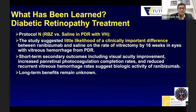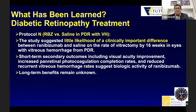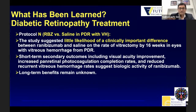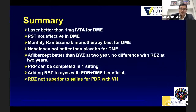Protocol N looked at ranibizumab versus saline in PDR with vitreous hemorrhage. The study found little likelihood of a clinically important difference between ranibizumab and saline on the rate of vitrectomy by 16 weeks. Short-term secondary outcomes including visual acuity improvement, increased PRP completion rates, and reduced recurrent vitreous hemorrhage suggest biological activity of ranibizumab. However, injecting ranibizumab for somebody with a fresh vitreous hemorrhage is probably not the best approach — it's not likely to quickly clear the hemorrhage. Summary: ranibizumab was not superior to saline for PDR with vitreous hemorrhage.